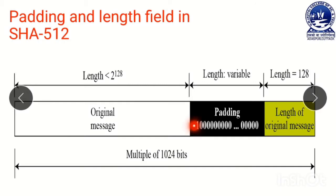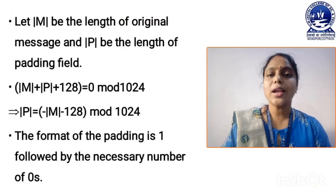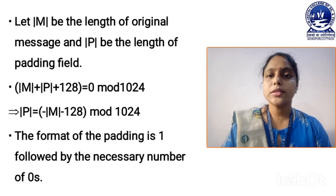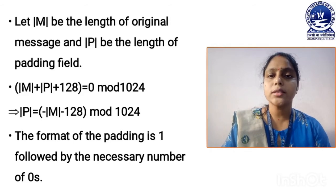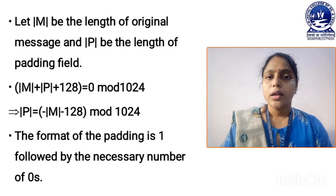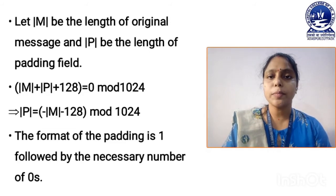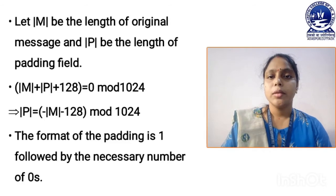How to calculate this padding field? For calculating the padding field, there is a formula. How to calculate padding bits? Suppose m is the length of our original message and p is the length of our padding bits. The formula is: |m| + |p| + 128 ≡ 0 mod 1024, which implies |p| = −|m| − 128 mod 1024. By using this formula, you can calculate the number of padding bits from the original message. In the padding bits, the first bit is always 1 and the rest of the bits are 0.